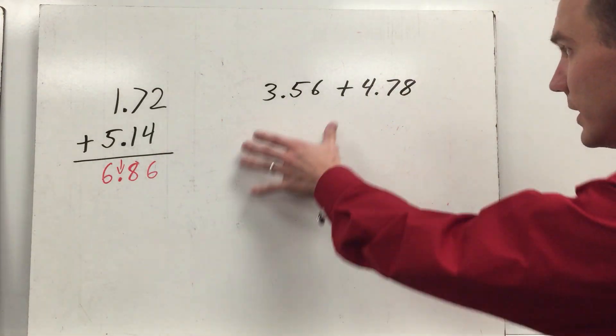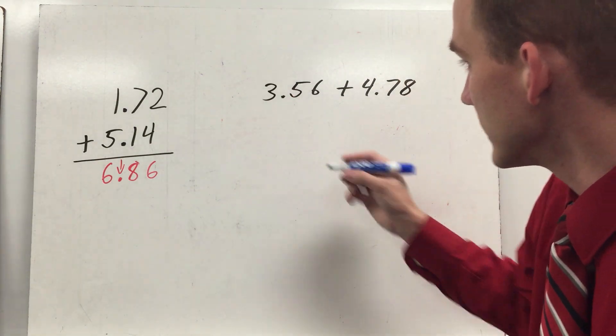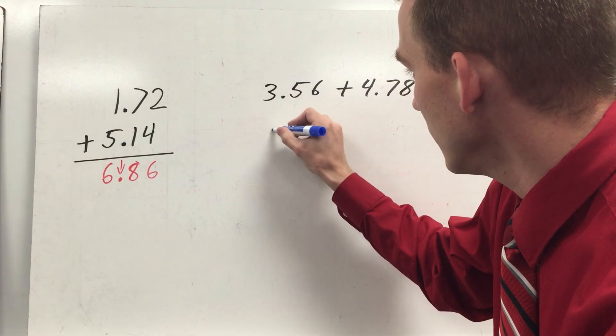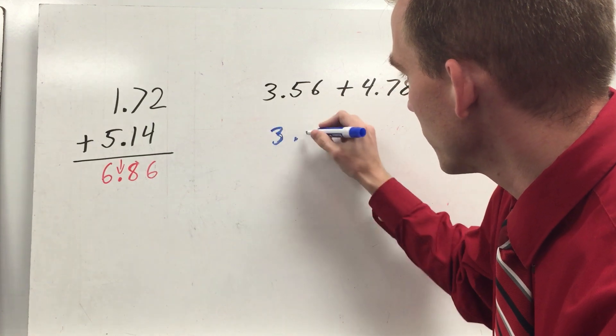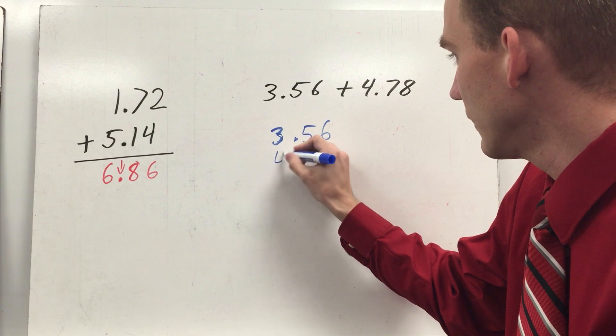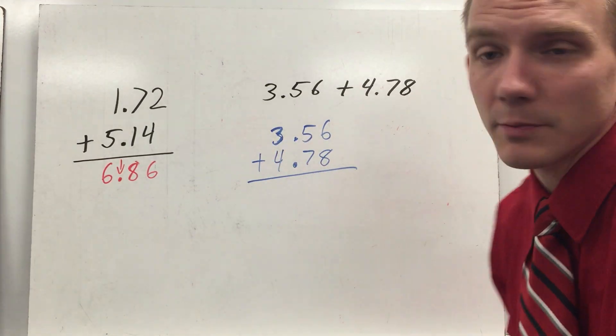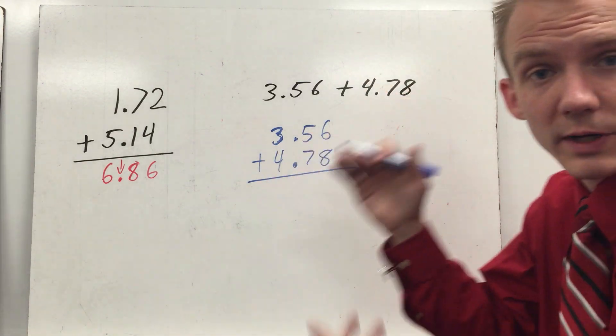Now this one is written horizontally, so the first thing you want to do is write it vertically and line up your decimal points. So I'll put a decimal point here. 3.56. Put my decimal point there. 4.78. Add them together. Remember the order doesn't matter in addition, so I could have written this the other way.